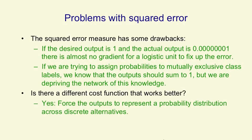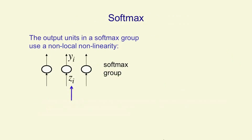What we need to do is force the outputs of the neural net to represent a probability distribution across discrete alternatives, if that's what we plan to use them for. The way we do this is by using something called a softmax. It's a kind of soft continuous version of the maximum function.